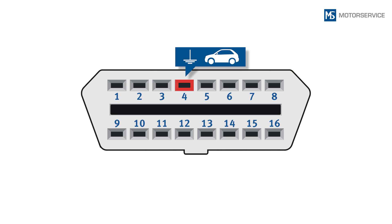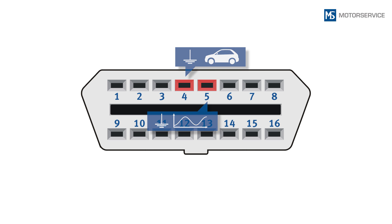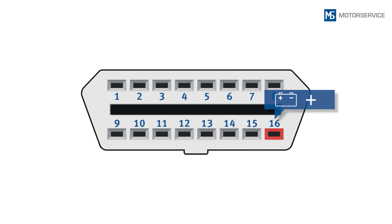Pin 4 is vehicle ground. Pin 5 is signal ground. Pin 16 is the positive battery terminal. All other pins can be freely used by vehicle manufacturers for additional diagnostic functions, such as air conditioning, ABS, airbags, and so on.